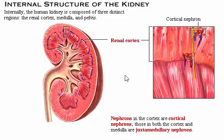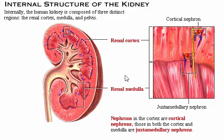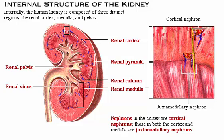Others lie in both the cortex and medulla and are called juxtamedullary nephrons. The second region is the middle layer called the renal medulla, in which you can see the triangular renal pyramids. These pyramids look striated because of parallel bundles of ducts carrying urine from the nephrons. The areas between pyramids are the renal columns, which are extensions of the cortex providing a route for blood vessels and nerves. The third region includes the funnel-shaped renal pelvis lying within the renal sinus, which collects urine from the pyramids and conveys it into the ureter.